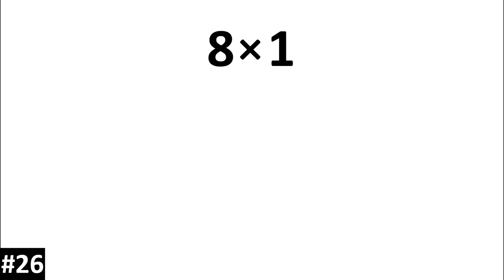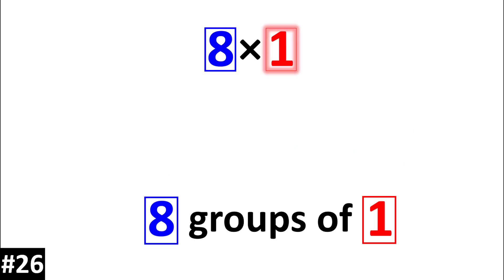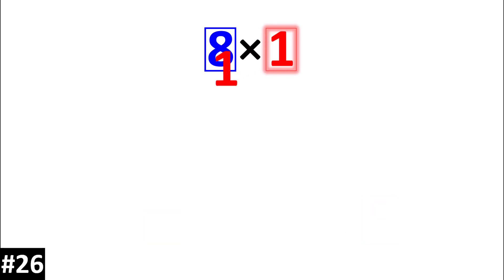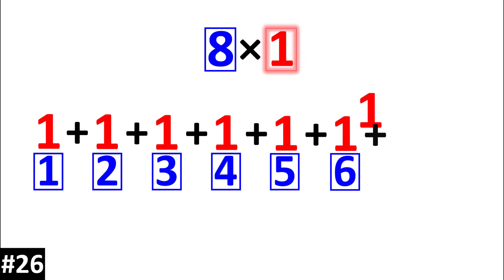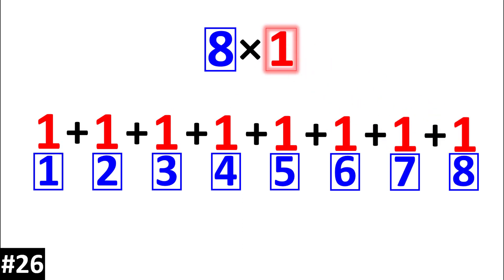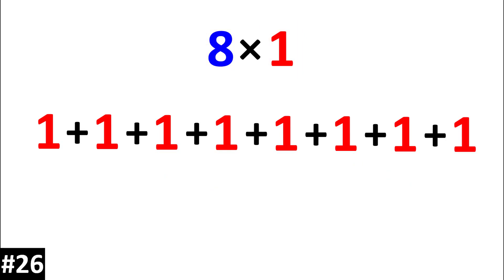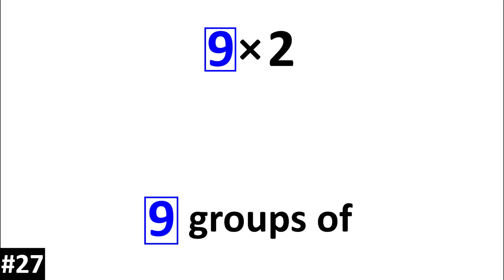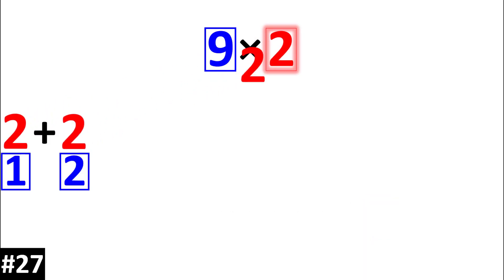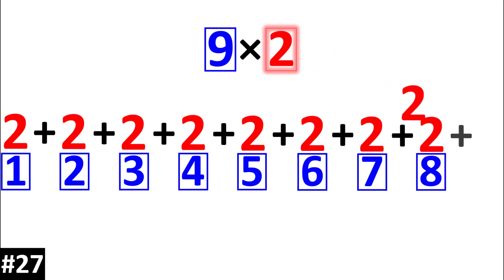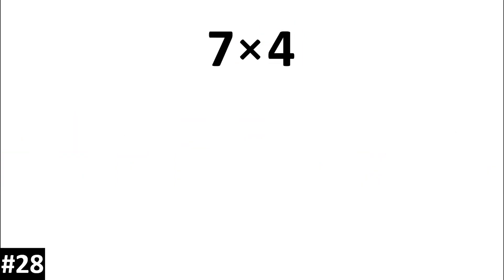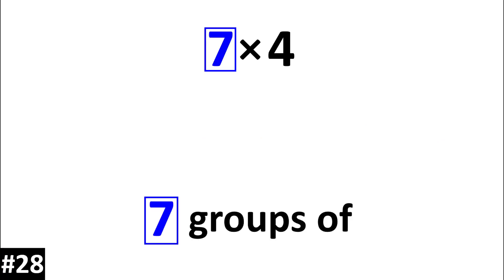8 times 1 is 8 groups of 1. 9 times 2 is the same thing as 9 groups of 2. 7 times 4 is the same thing as 7 groups of 4.